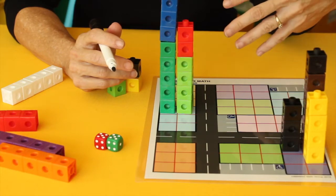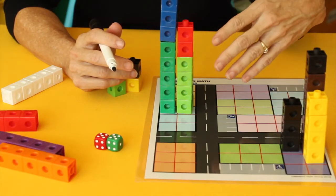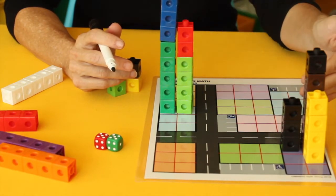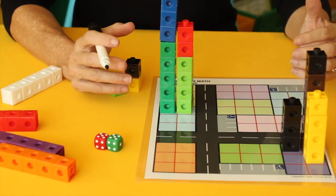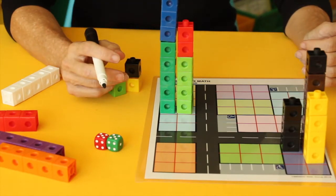So they're going to use words of comparison to compare their skyscrapers to their neighbors' skyscrapers. And that gets into the idea of bar graphs and being able to read a bar graph.